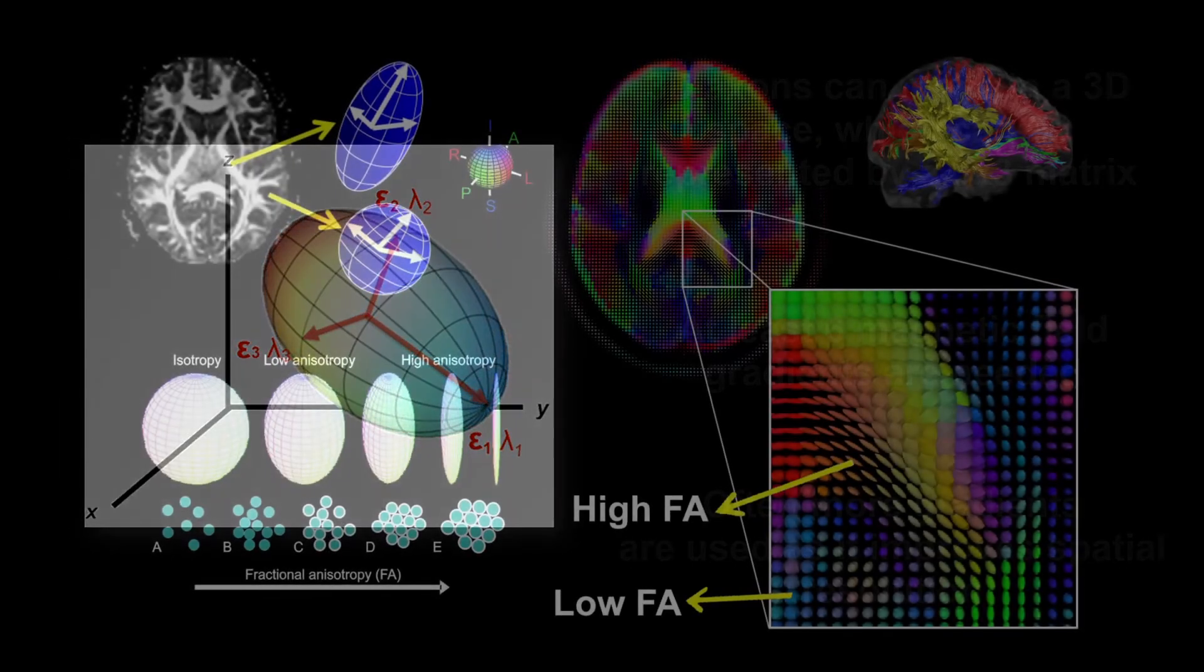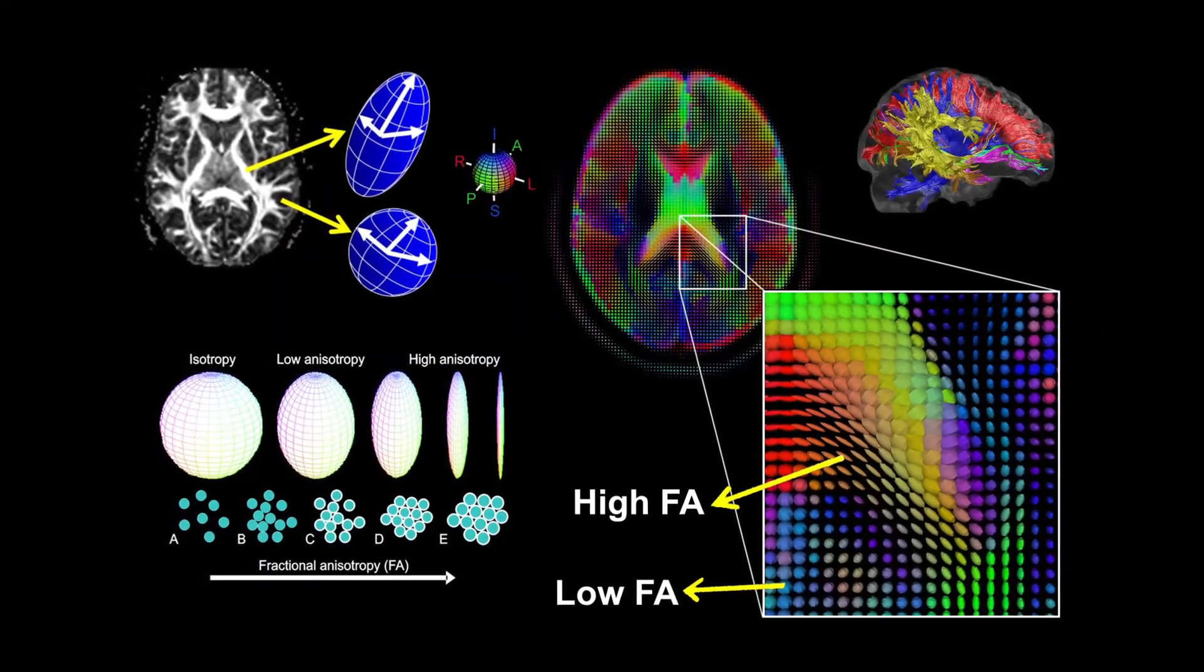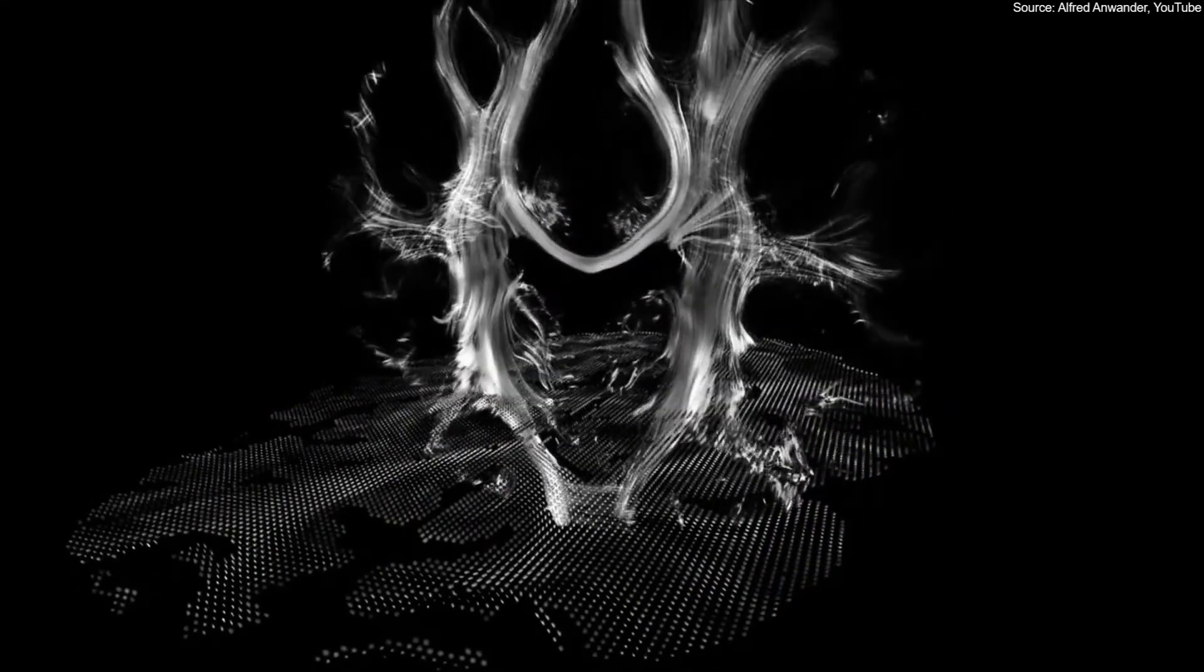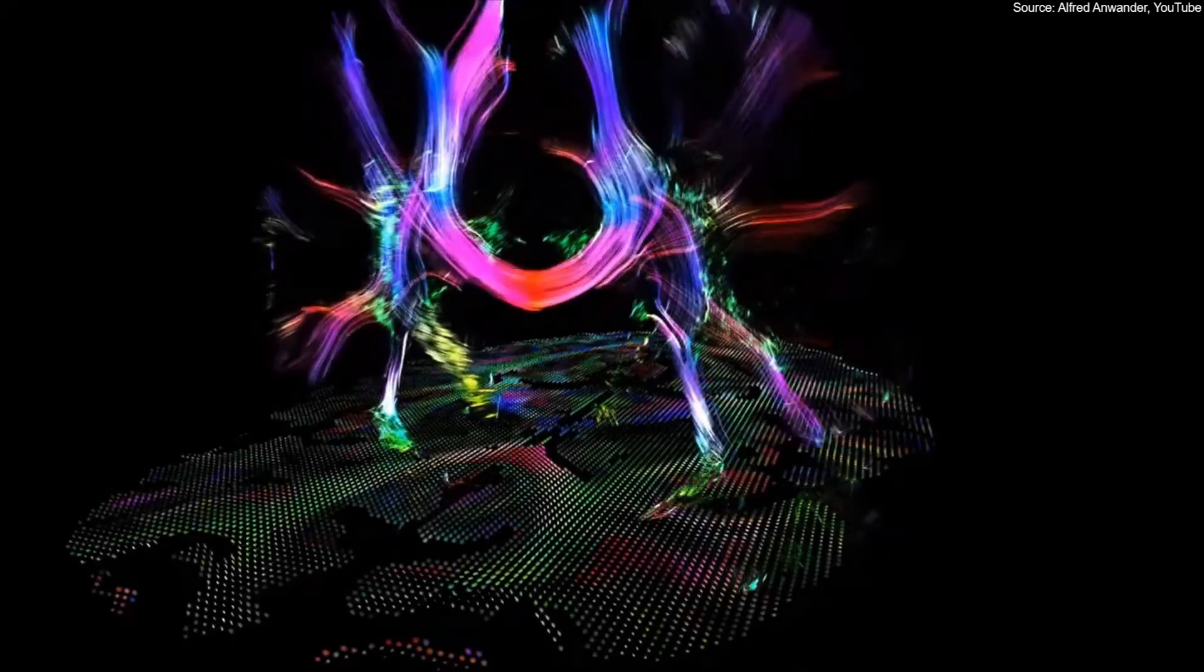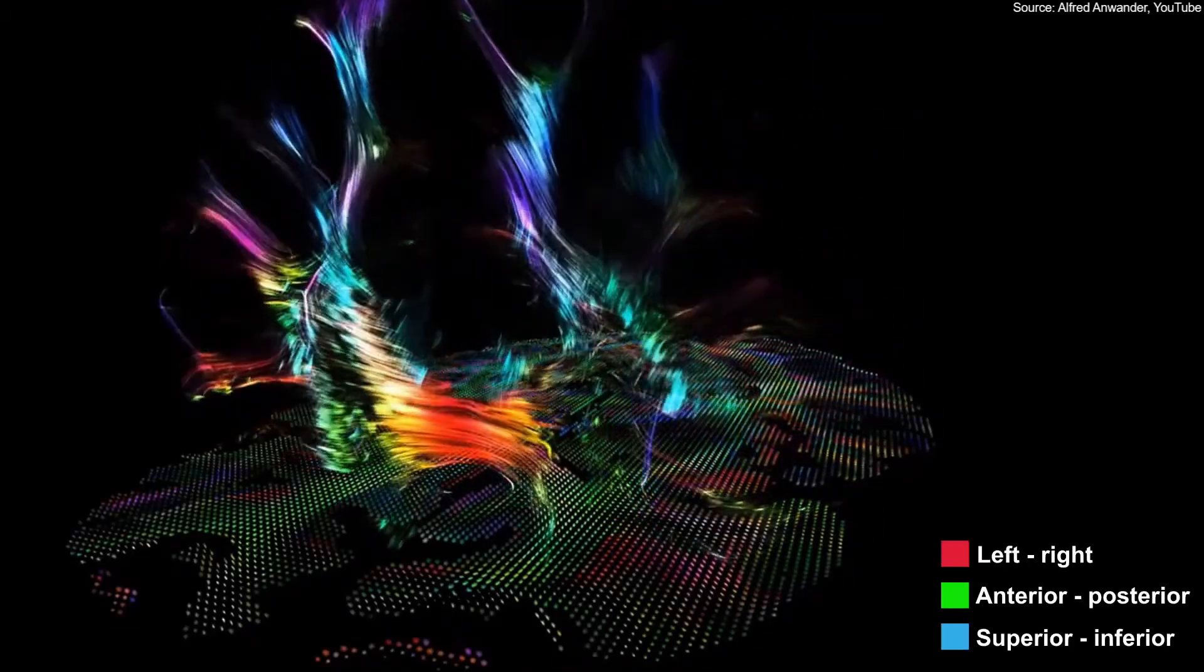The value that represents protons moving more in one direction than in the other is called fractional anisotropy. Put everything together and we get our spaghetti brain image, showing all the white matter tracts of the brain. As a final touch, we can give the image some colors, which represent different directions of the 3D space.